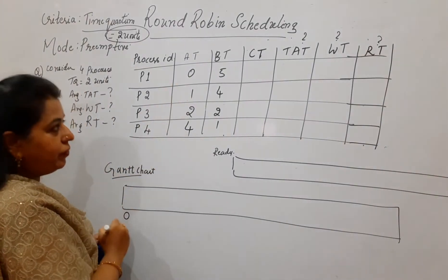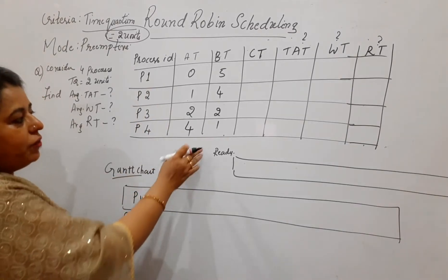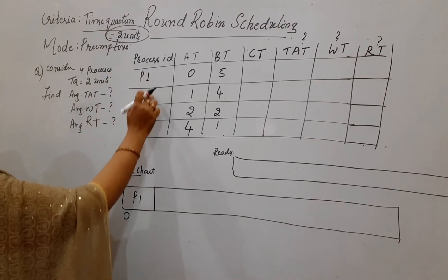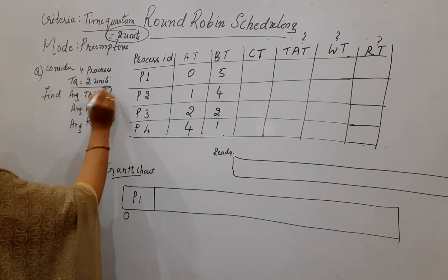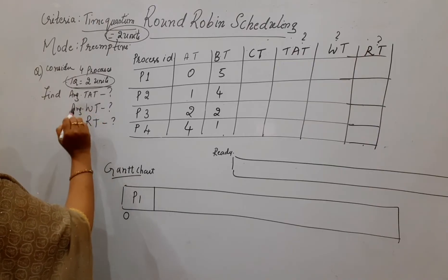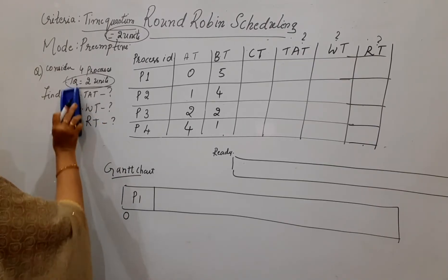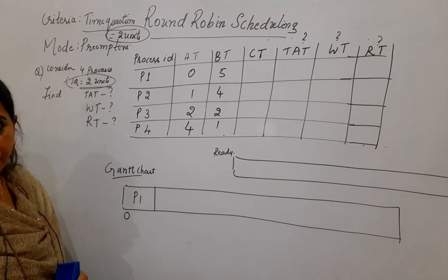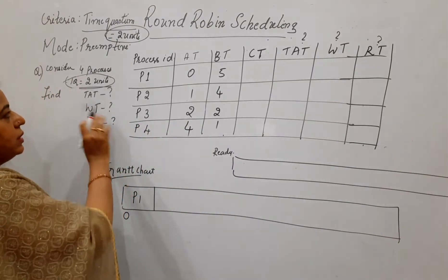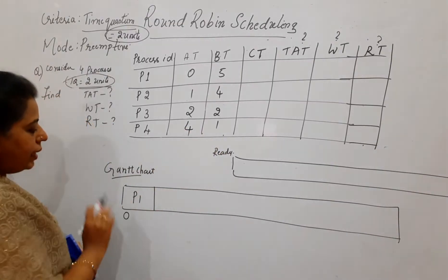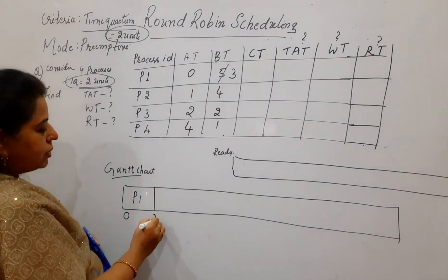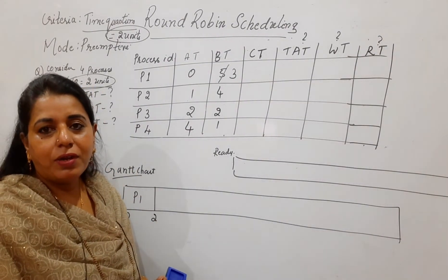The question asks to consider 4 processes P1, P2, P3, P4 with time quantum equal to 2 units. At arrival time 0, process P1 has arrived — schedule P1 only for 2 units. P1's burst time is 5, so you schedule it for 2 units and the pending burst time is 3. At time 2, check which processes have arrived: P2 and P3 have arrived, so put them in the ready queue. Don't forget to put P1 back also, since P1 has not completed its task — it still has 3 units pending. P1's turn will come again.